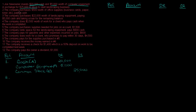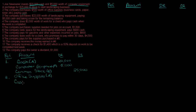Let's look at number two. The company purchased $5,000 worth of office supplies — business cards, paper, toner, et cetera — paying cash. So we know there's cash involved and office supplies. Office supplies is an asset because when you buy them, they are something you can use to make money for your business — you have not used them yet. So office supplies are an asset, and my other account is cash.